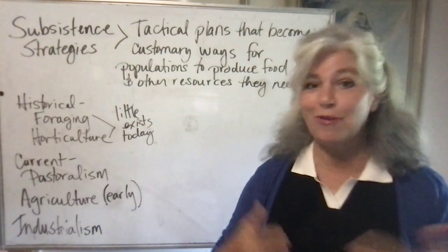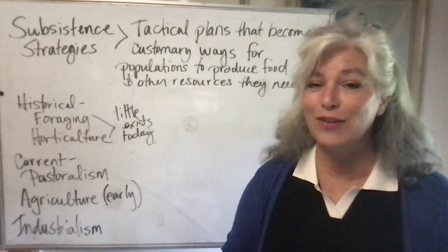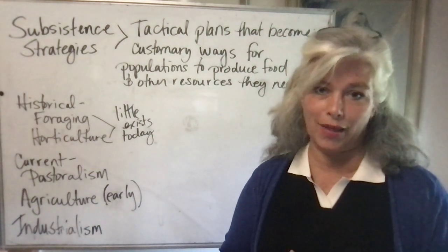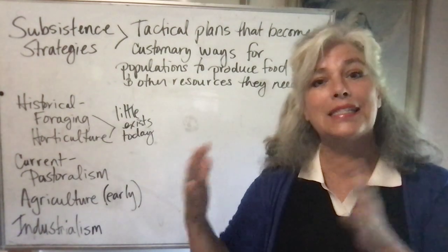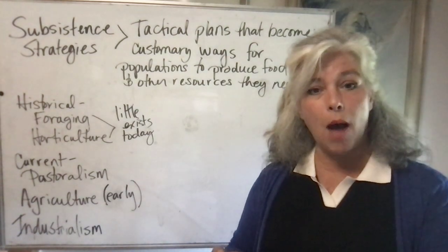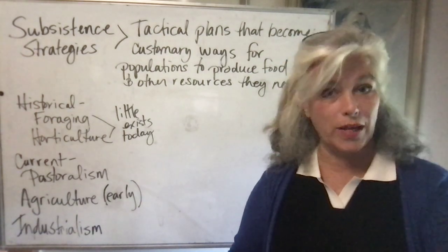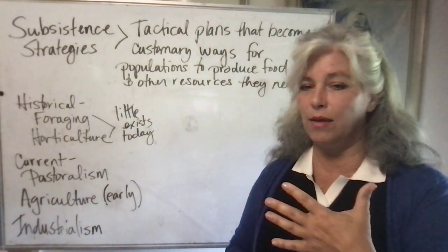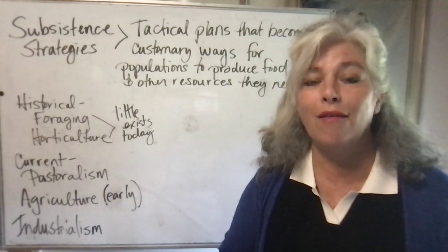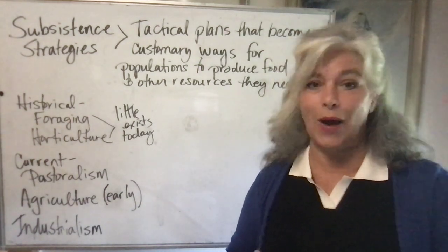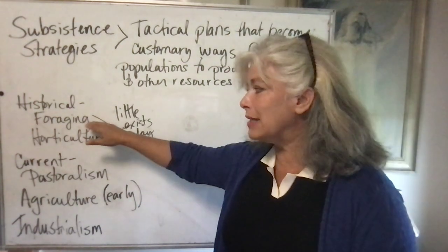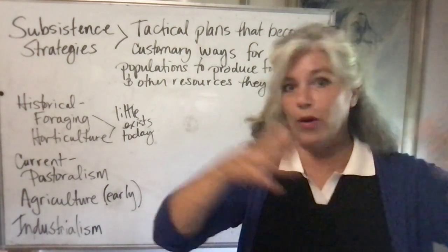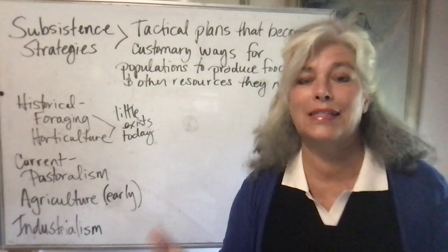Subsistence strategies are a big deal because you can't have population expansion or growth without enough food and resources to support the population sizes seen in the five different stages of the demographic transition model. Historically, stage one of the demographic transition model — where there's a high birth rate and high death rate — corresponds to foraging, the only subsistence strategy that got human beings to survive the first 40,000 years on earth.